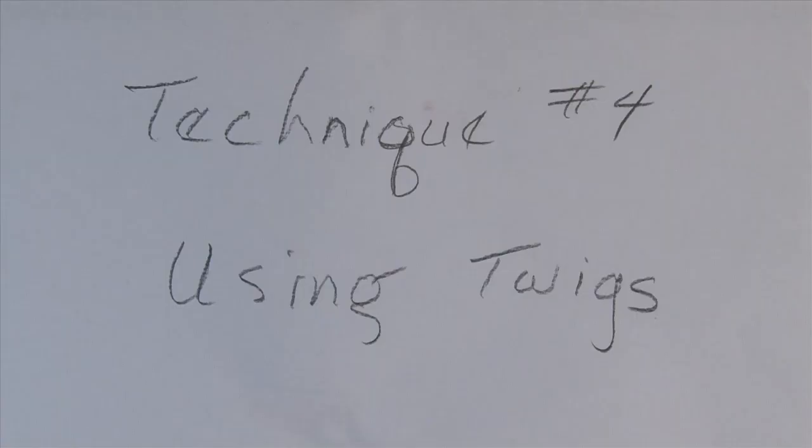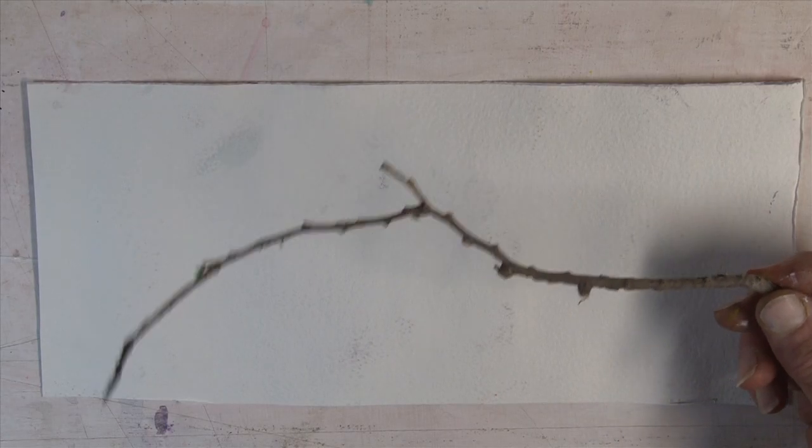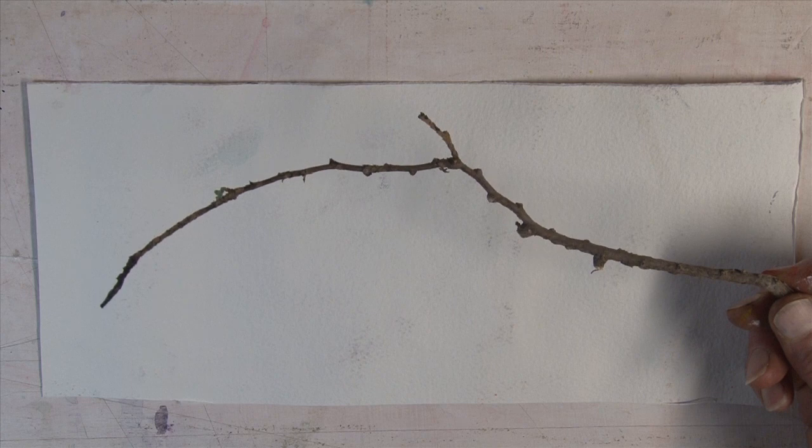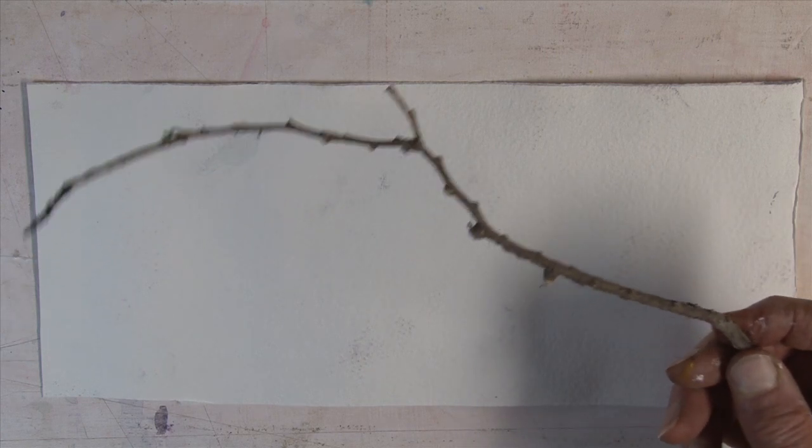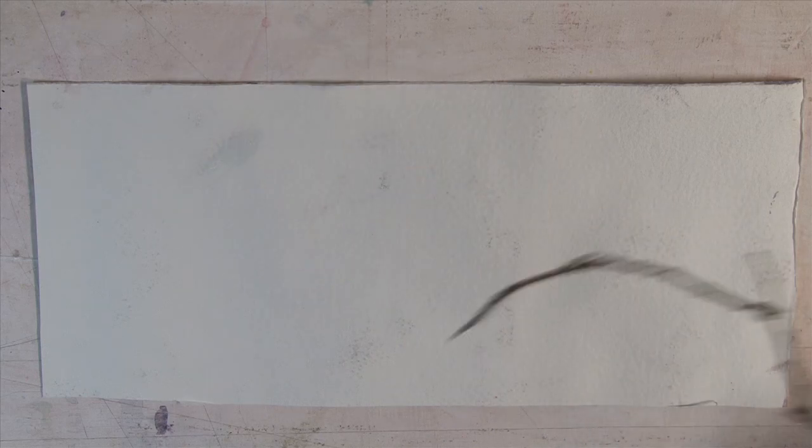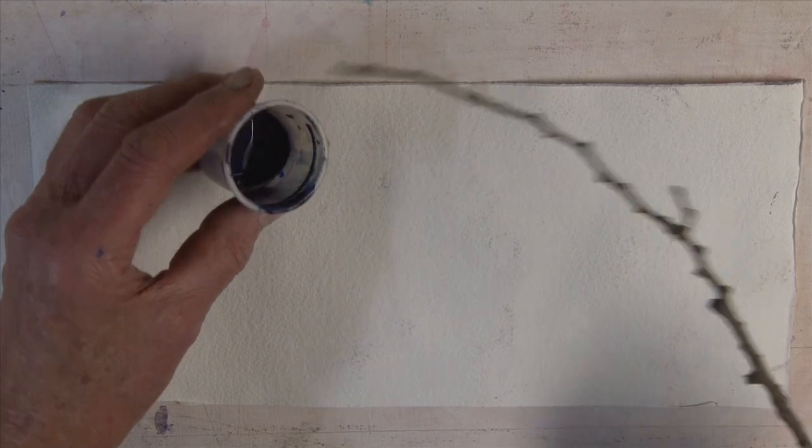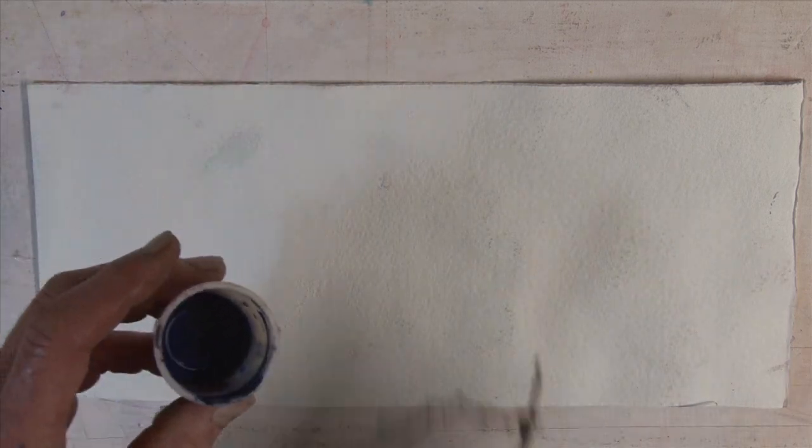And the last technique I'd like to take a look at is actually using twigs to draw branches. I find that these cedar twigs are particularly good. You kind of want a long one and you hold it back here because then you can't really control the edge. I also find it helpful to have a little cup full of paint so I can really get the tip coated with paint.